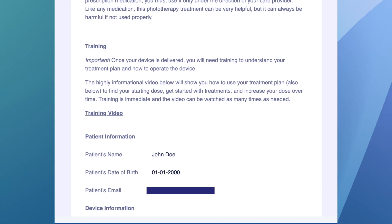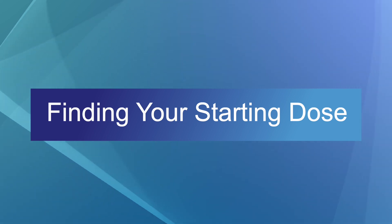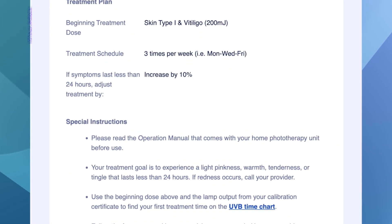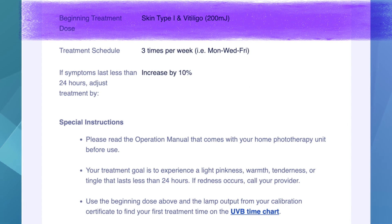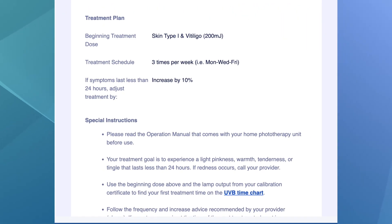Have your phototherapy instruction sheet ready? Great! Let's take a closer look. Find the treatment plan section on your phototherapy instruction sheet. The first number you should see in that section is your starting dose. In other words, this is the starting point for your entire treatment regimen and the dose you will enter into the device to start your treatment course.